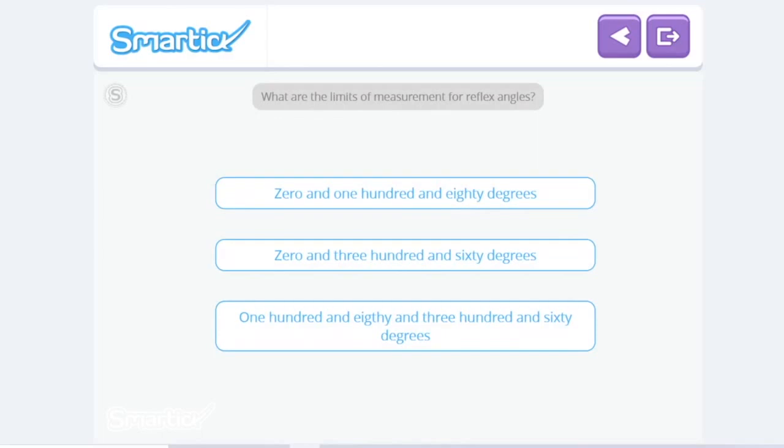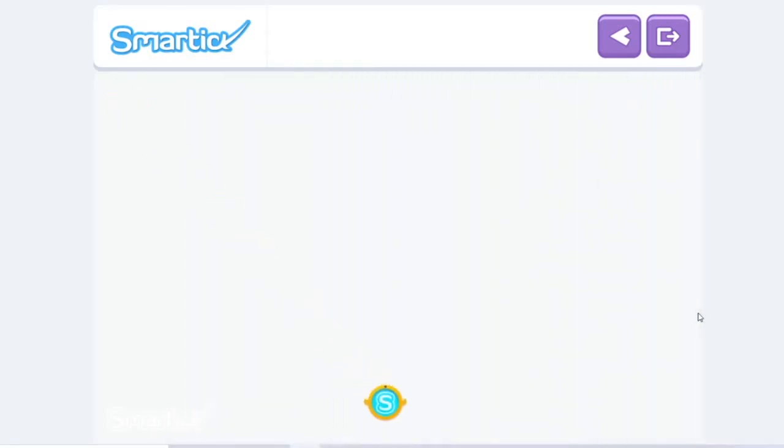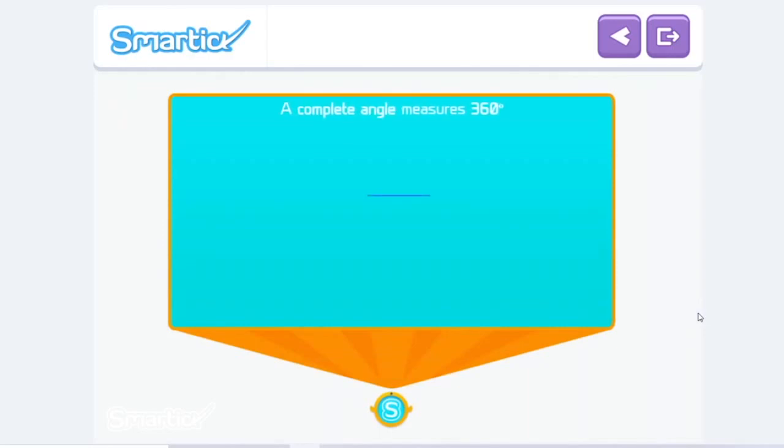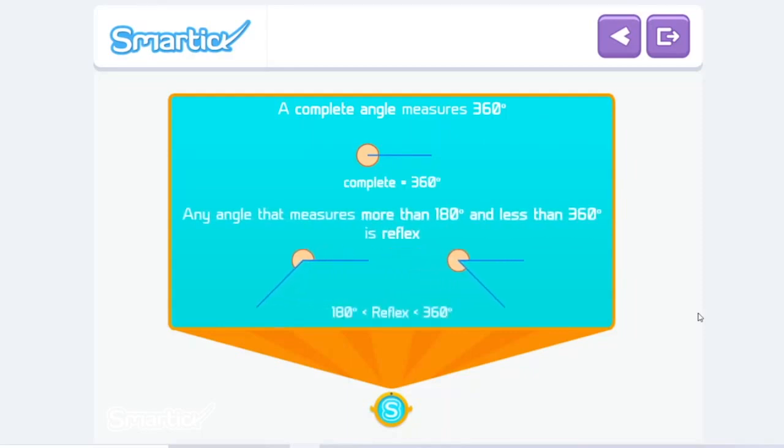For a reflex angle, it would be between 180 and 360 degrees. Excellent. A complete angle measures 360 degrees. Any angle that measures more than 180 and less than 360 degrees is reflex.